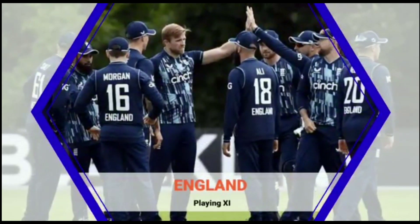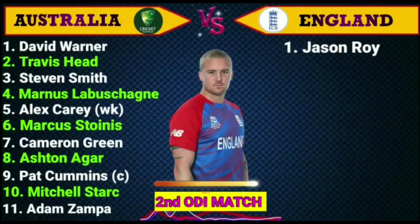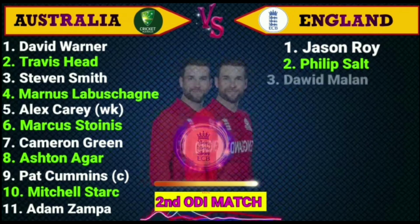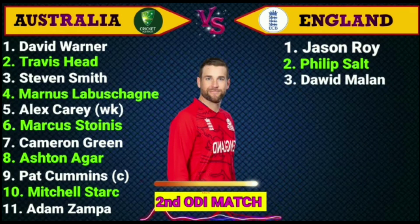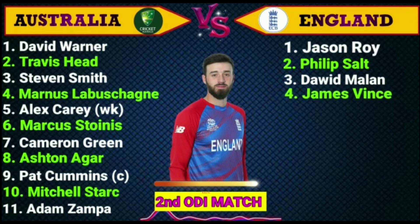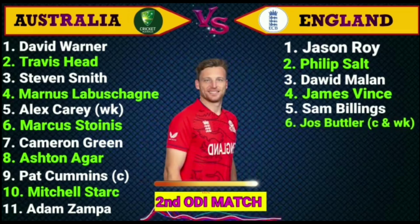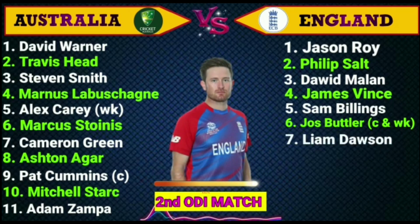England Best Playing 11: 1. Jason Roy – Right Hand Batsman. 2. Phil Salt – Right Hand Batsman. 3. Dawid Malan – Left Hand Batsman. 4. James Vince – Right Hand Batsman. 5. Sam Billings – Right Hand Batsman. 6. Jos Buttler – Captain and Right Hand Batsman.